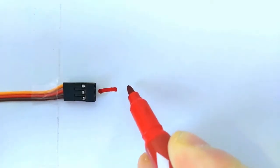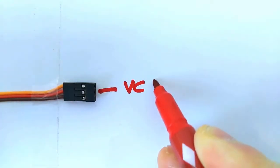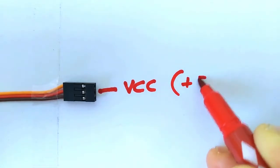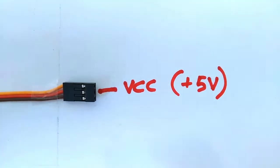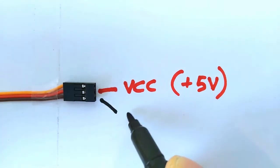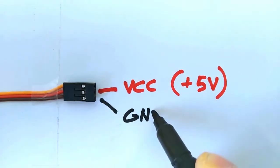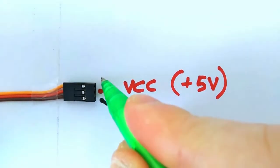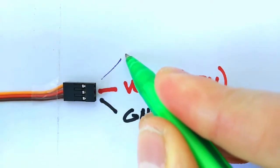The red wire is the positive power supply, mostly 5 volts. The brown wire is connected to ground. The orange wire is the signal wire. A standard servo is controlled with this wire through PWM.